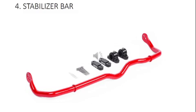Komponen yang keempat adalah stabilizer bar. Fungsinya adalah untuk meredam efek rolling dari kendaraan, khususnya saat berbelok atau saat melewati jalan bergelombang. Fungsi lainnya: untuk menjaga kendaraan tetap stabil terutama saat berbelok, mengurangi kemiringan bodi mobil yang disebabkan oleh gaya sentrifugal, dan meningkatkan daya cengkraman ban terhadap permukaan jalan saat berbelok.